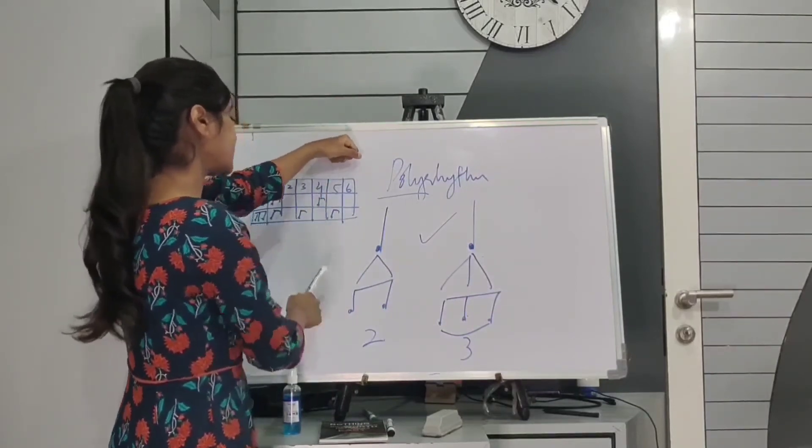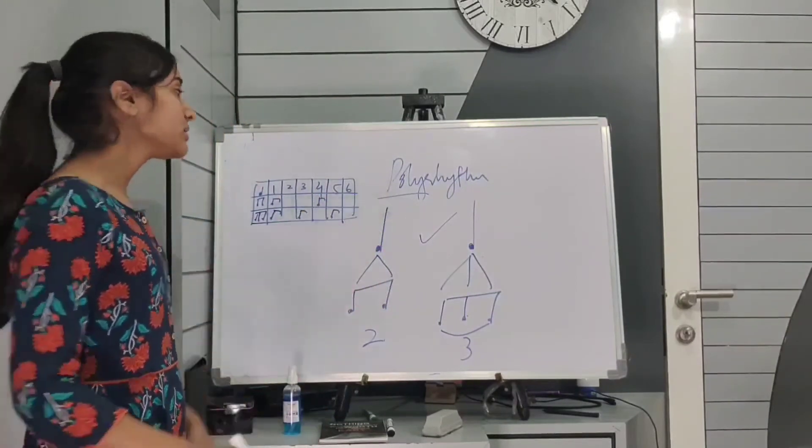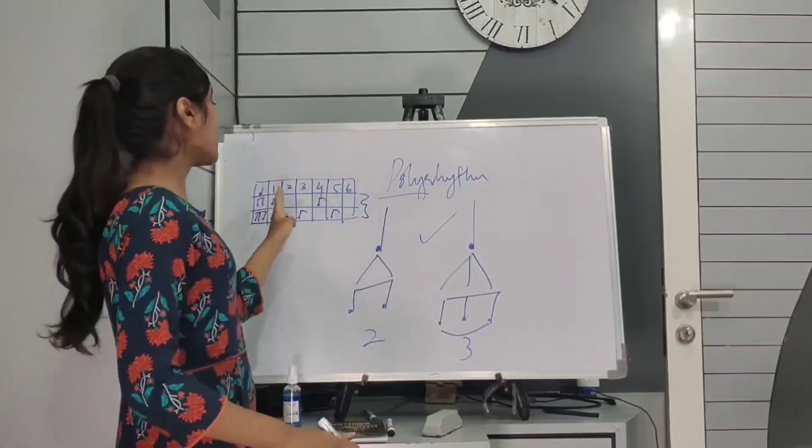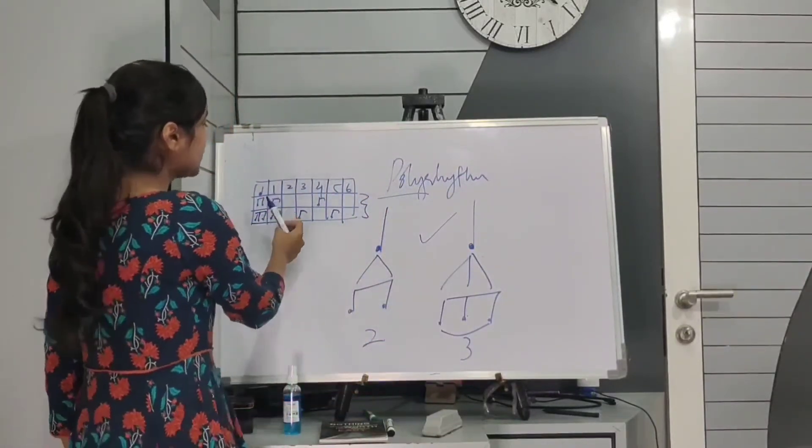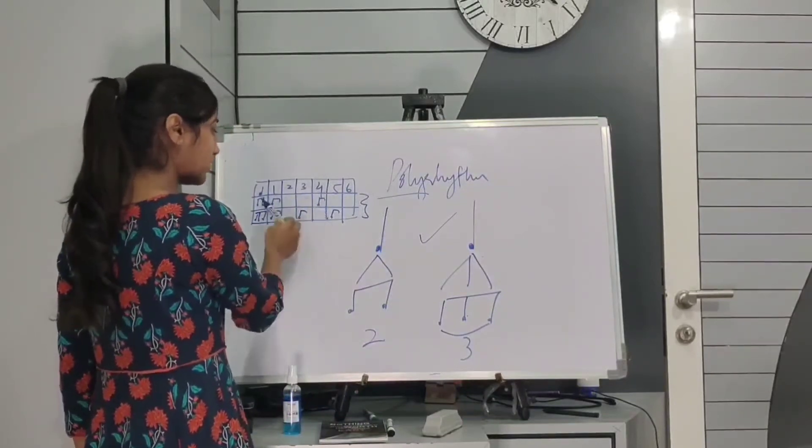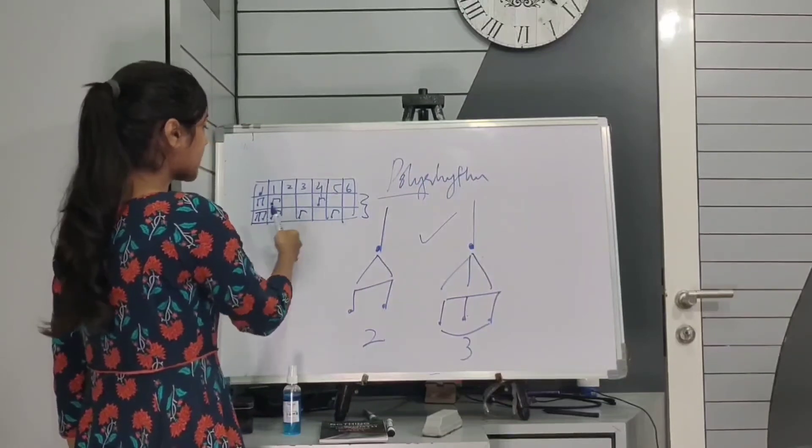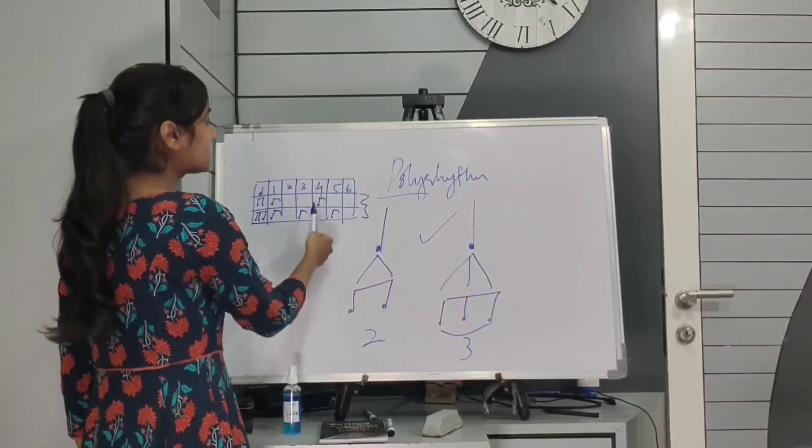One, two, three, four, five, six. Now, to play the polyrhythm, I have to play these two rhythms at the same time. So, in the right hand, I will play a note on one and a note on four. And in the left hand, I will play on one, three and five.